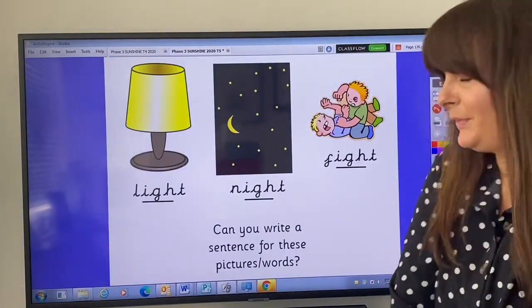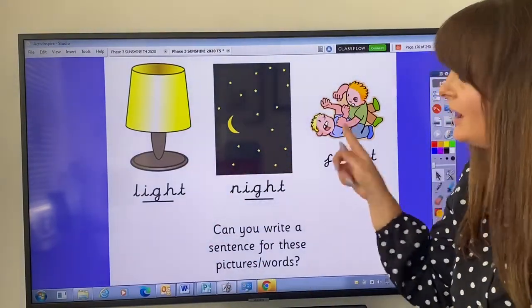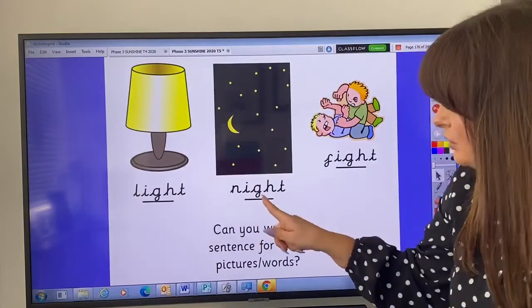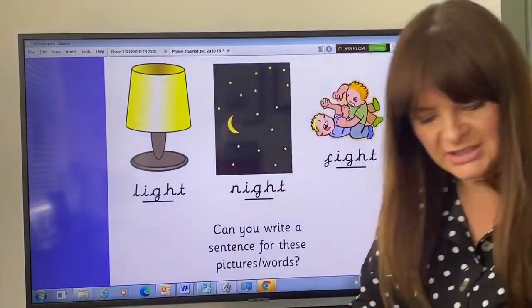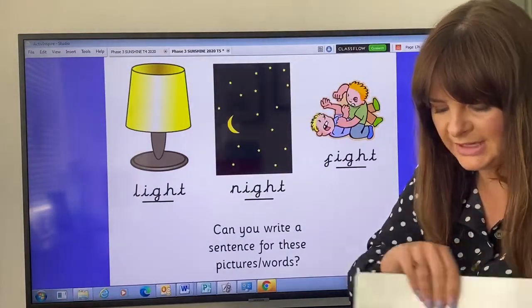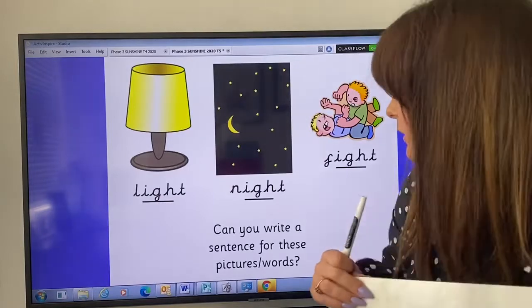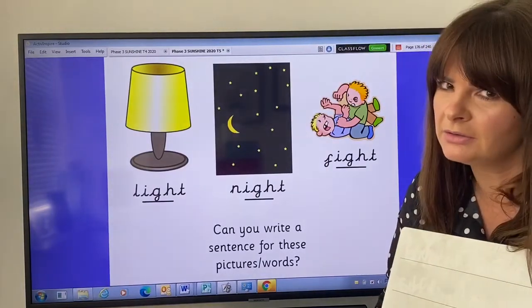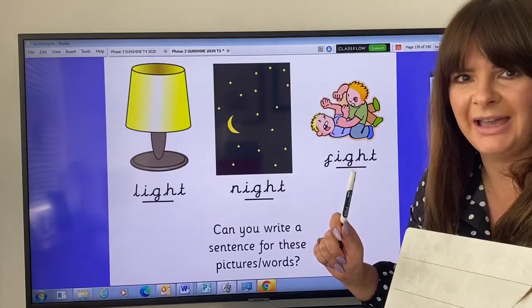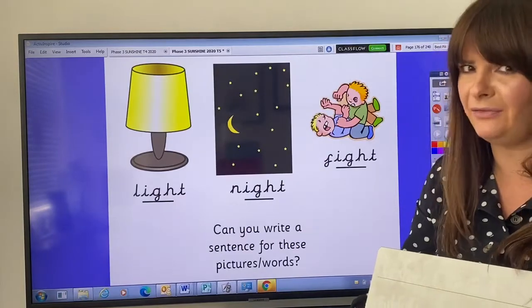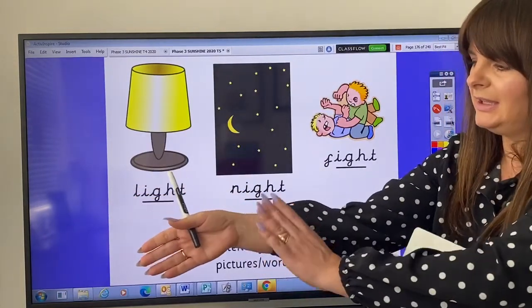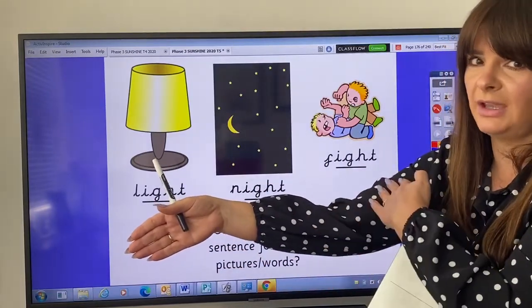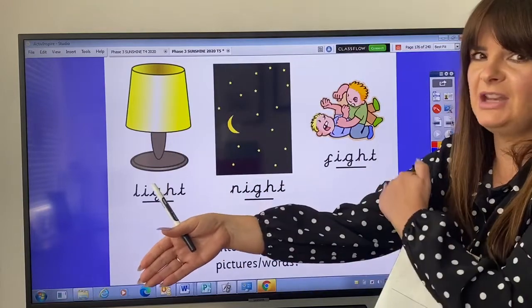Okay, now finally, we're going to have a go at writing a sentence for these pictures. Now I'll do one with you, and then I'd like you to practice writing a sentence for each of these words. So we have light, night, and fight. So I'm going to get my whiteboard, just like we would at school. And I'm going to have a go at writing one with you. So shall we write about the night? What is it like at night time? Is it light or is it dark? That's right, it's dark. So shall we write, it is dark at night. I'm never going to remember that sentence, so I need to say it a few times. Can you do it with me? Get your sentence arm out. It is dark at night. Can you say again? It is dark at night. Can you whisper it? It is dark at night. It is dark at night. Well done.